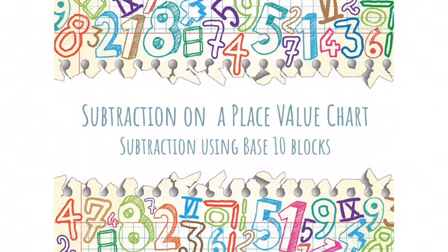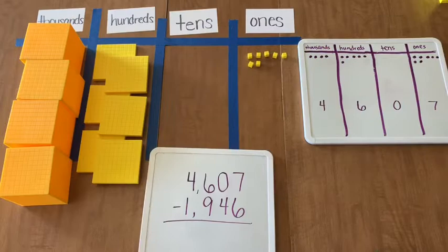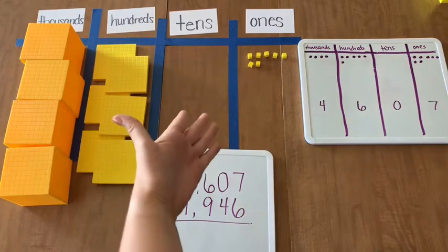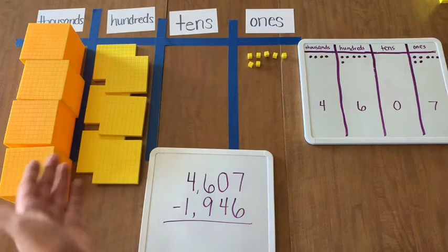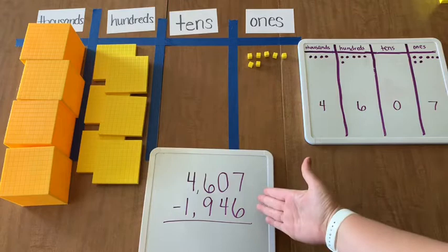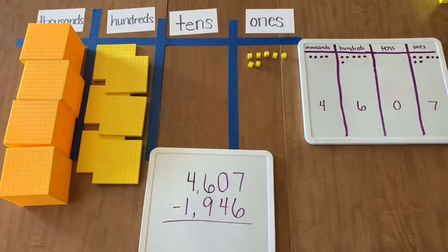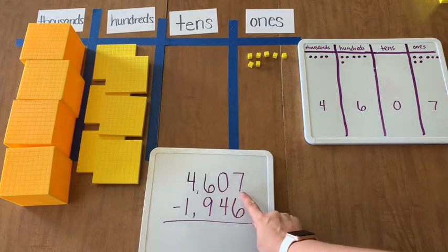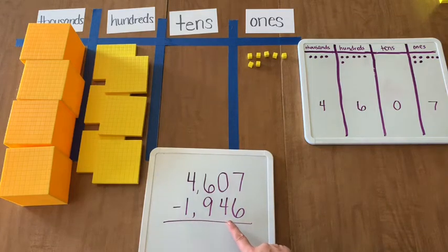So I hope you enjoy this video. In 3rd grade I know that you learned to use base 10 blocks to solve subtraction problems. So I have our base 10 system set up here, and I also have the place value chart that we've been using in 4th grade and standard algorithm. So when we start a subtraction problem we know that we must read it, 4,607 minus 1,946.